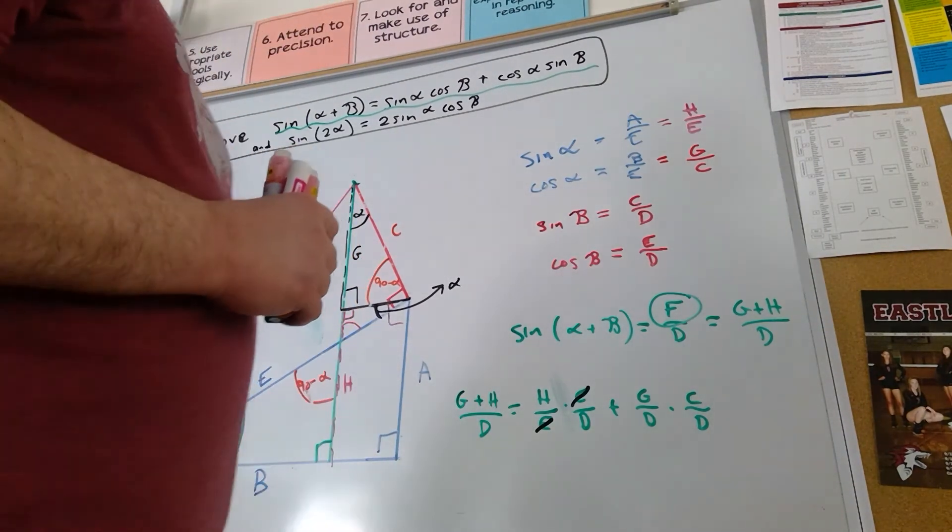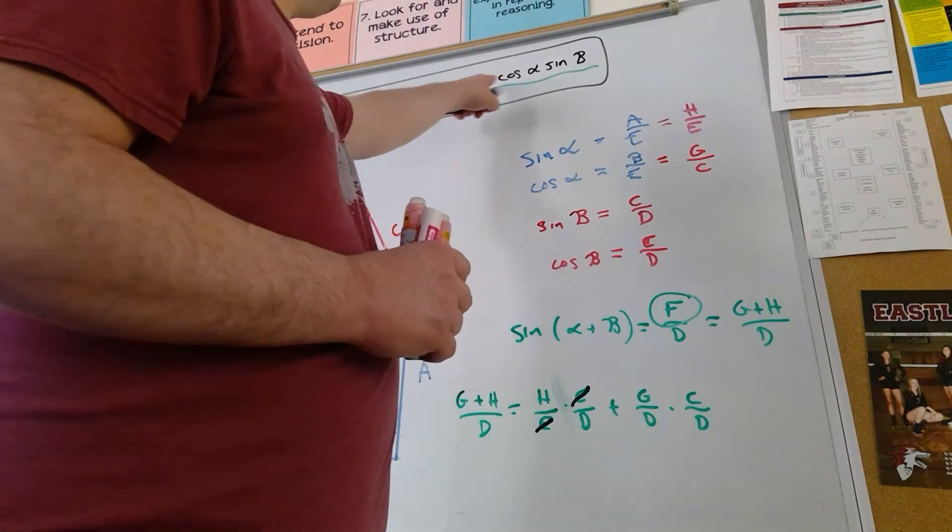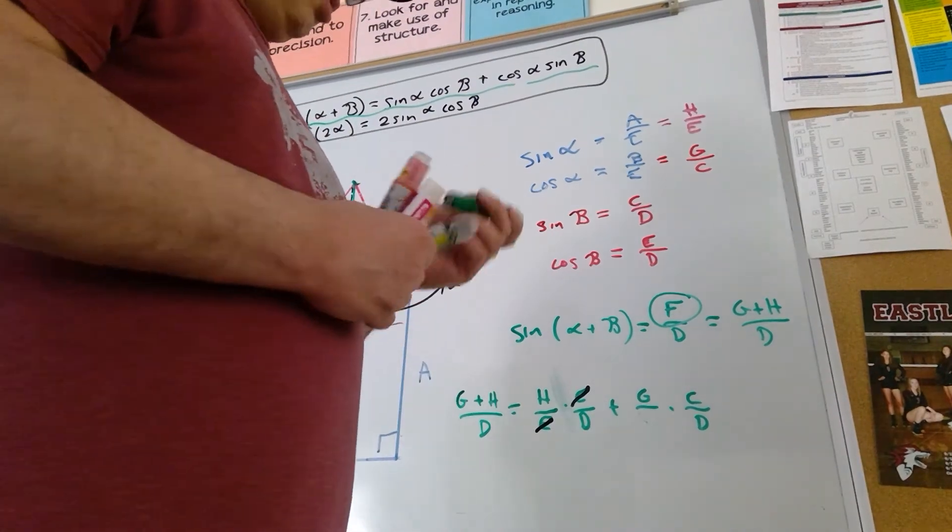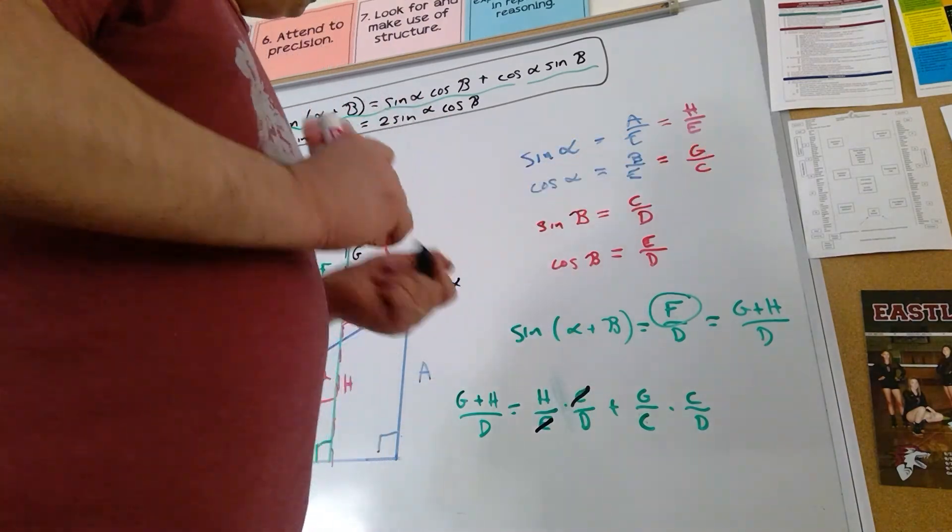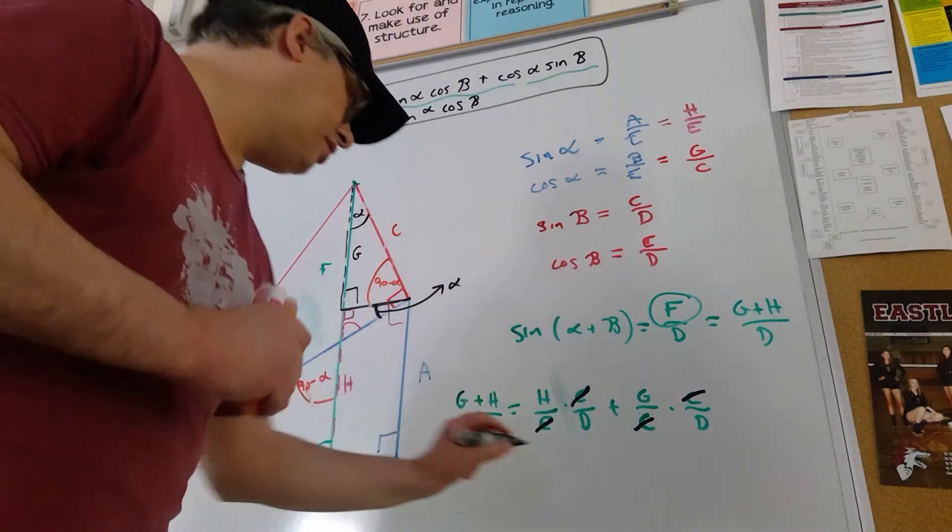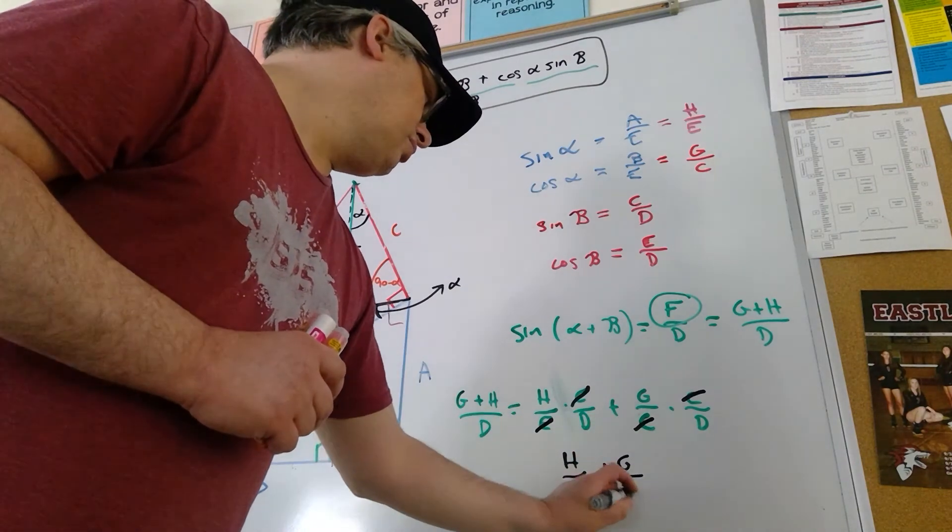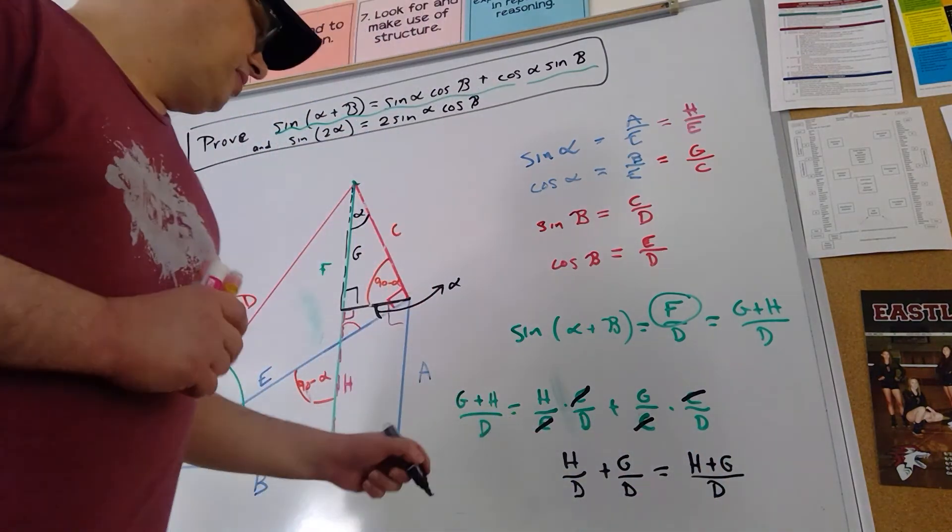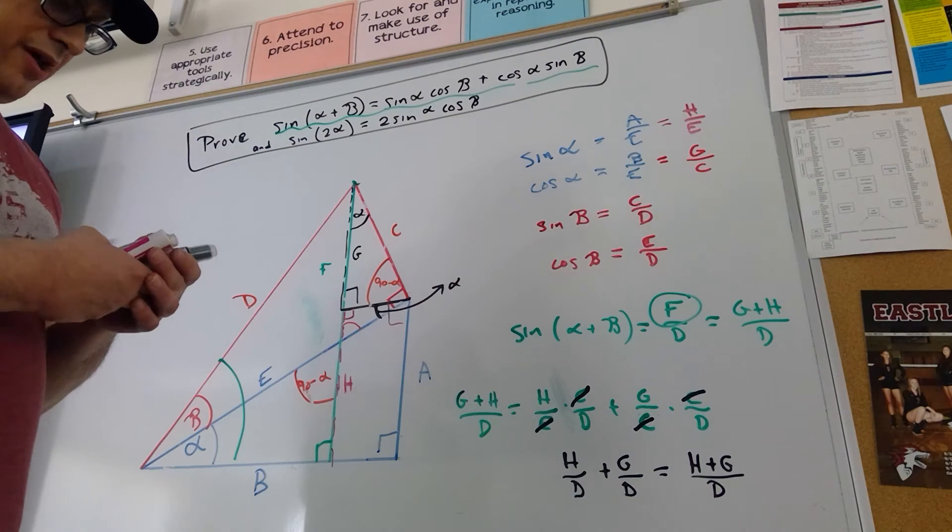Over here, I did something wrong. What did I do wrong? So this is supposed to be cosine of alpha, which is G over C. That's what I did wrong. G over C. You can see on the board I just made a stupid error there. So cross out the C's. And I am left with H over D plus G over D. We have a common denominator. That is H plus G over D. And hopefully we can see that, yeah, that's really the same thing as G plus H over D. So this is proved. The top line is proved. Bada-bing.